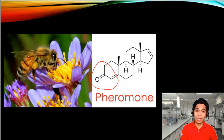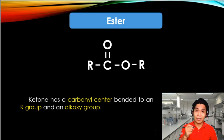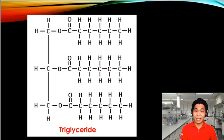Esters have a structure of a C double-bonded O, O, R. In this structure, you will see that a carbon is attached to two oxygen atoms: one oxygen is double-bonded to that carbon, while the other oxygen has a single bond to that same carbon atom. That is your ester. Oils, just like essential oils, have esters in them. This is the structure of an oil — it is a triglyceride — and an ester is located here. Just find the carbon with two oxygens, one in a single bond and one in a double bond.